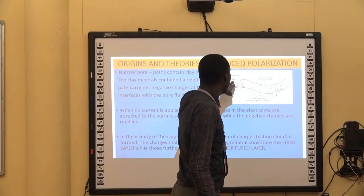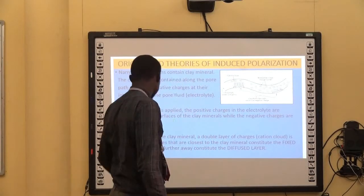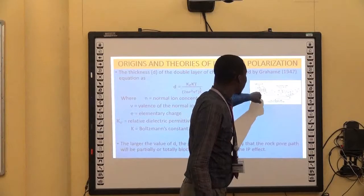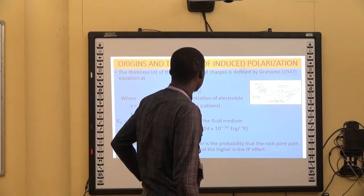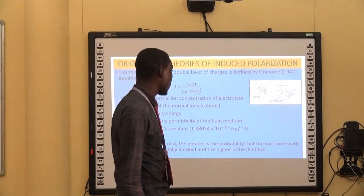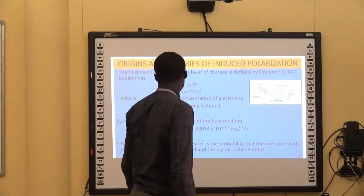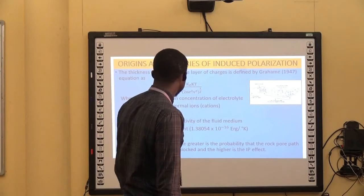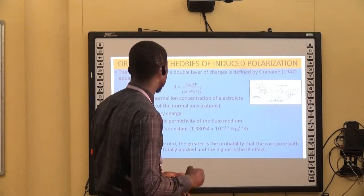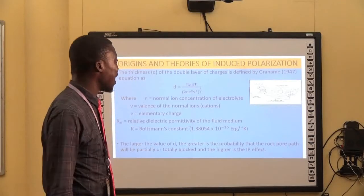So we have the first layer being the fixed layer, while those that are far away are the diffused layer. The thickness of this layer has been defined by Brannan (1947) by an equation, D being the thickness, while the other parameters are as defined on this slide. The larger the value of D, the greater is the probability that the rock pore will be partially or totally blocked, and the higher the IP effects.